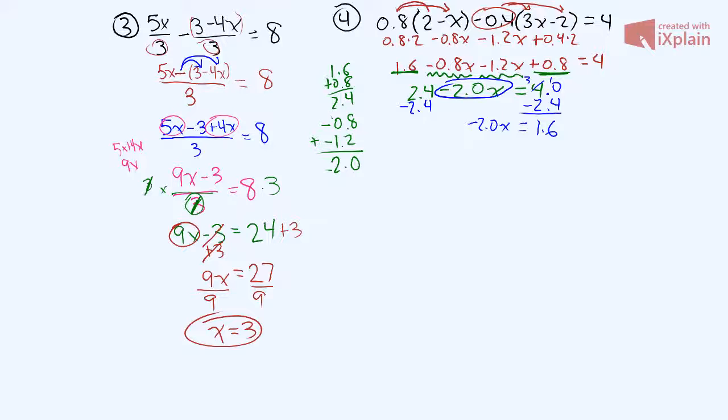And then finally, in order to solve for one of our variables, we have to divide by negative 2.0, divided by negative 2.0, and x equals negative 0.8. Because what we can do is come over here and say 1.6 divided by 2. 2 does not go into 1, but it goes into 16 eight times evenly. So we have 0.8, and a positive divided by negative is a negative.